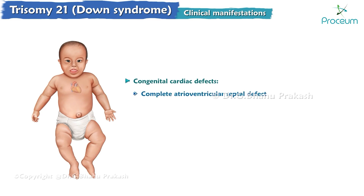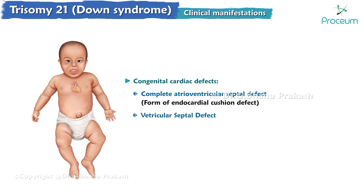Complete atrioventricular septal defect is the most common cardiac defect, and is a form of endocardial cushion defect. Ventricular septal defect and atrial septal defect are also frequently seen in patients with Down syndrome.